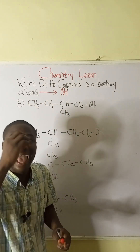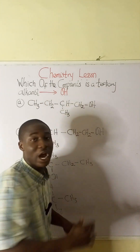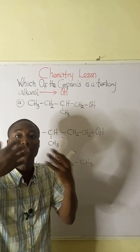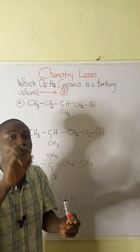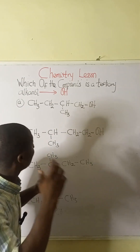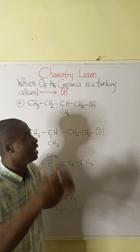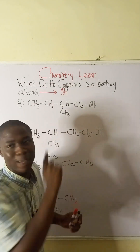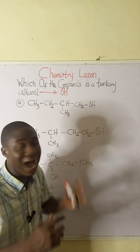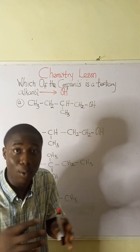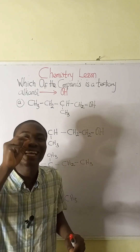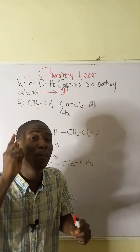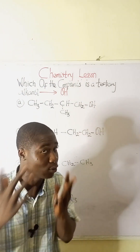This question asks us to identify the tertiary alkanol. From the word 'tertiary,' it means three levels. To know the class to which an alkanol belongs — specifically to find the tertiary alkanol — you basically look at the carbon that bears the OH functional group and check how many carbons it is directly attached to.